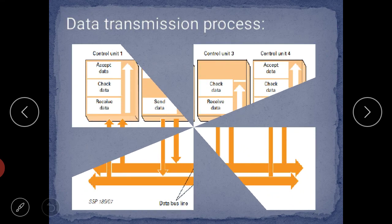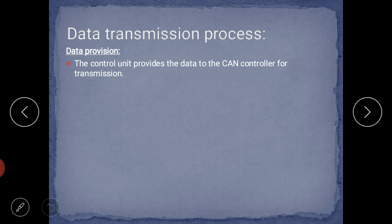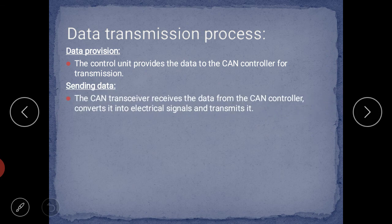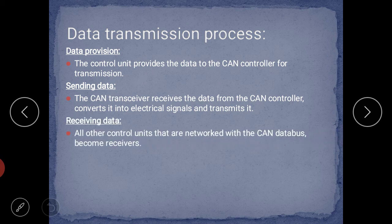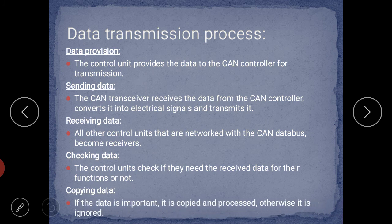Now, the data transmission process. There are four different control units — 1, 2, 3, and 4 — connected to common data bus lines. Step 1, data provision: the control unit provides data to the CAN controller for transmission. Step 2, sending data: the CAN transceiver receives the data from the CAN controller, converts it to an electrical signal, and transmits it. Step 3, receiving data: all other control units networked with the CAN data bus become receivers. Step 4, checking data: each control unit checks if it needs the received data for its function.